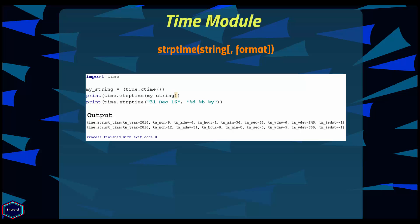The strptime() function is the inverse of strftime() — it parses a string representing time into a time tuple according to a format specification. In this example, I call ctime() which returns a string representing the current date and time, then call strptime() without format arguments, and the output shows the string has been converted into a time tuple. I also show an example passing a custom string with its respective format codes. If the string cannot be parsed according to the format or has excess data, a ValueError is raised.